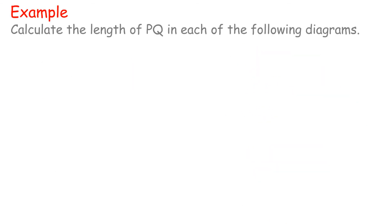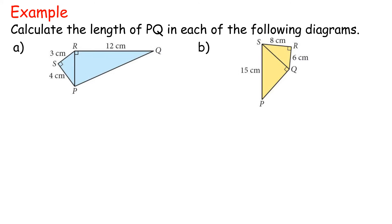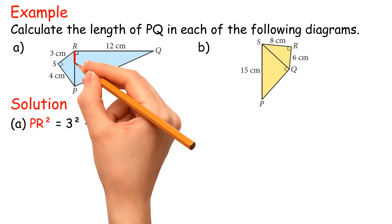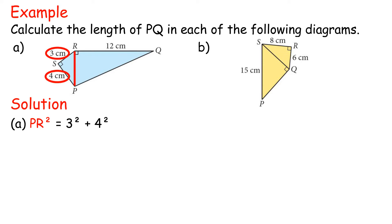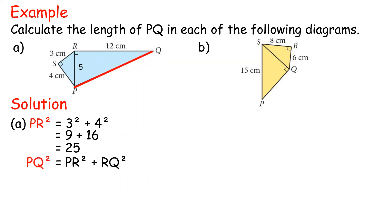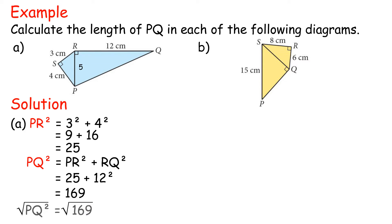Example: calculate the length of PQ in each of the following diagrams. Solution A. PR² = 3² + 4² = 9 + 16 = 25. PQ² = PR² + RQ² = 25 + 12² = 169. PQ = √169 = 13 centimeters.